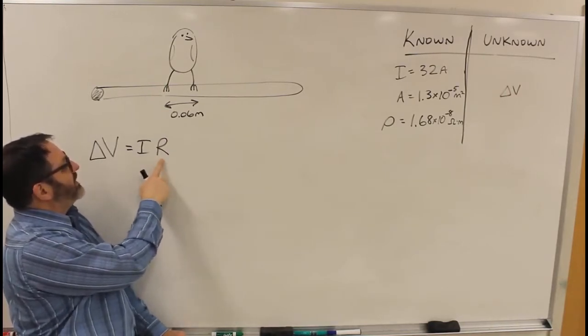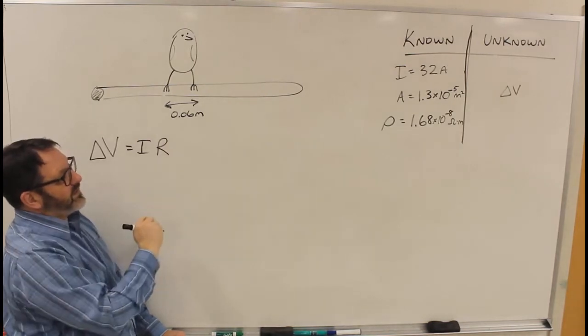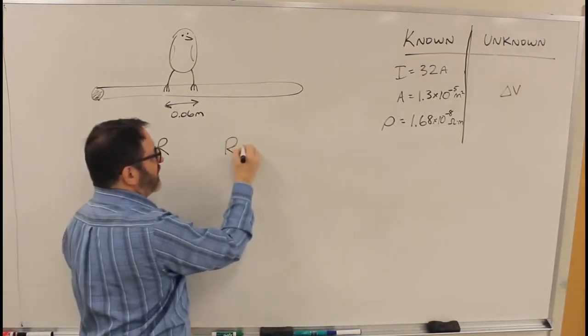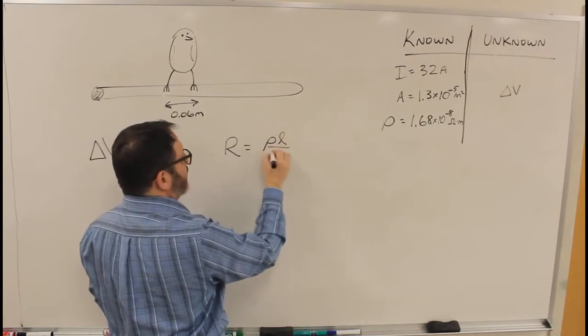So the current times the resistance. Current we're given, we need the resistance, and we know R is rho L over A.